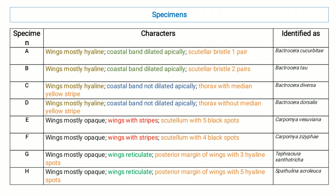Specimen C had wings mostly hyaline, coastal band not apically dilated, and thorax with a median yellow stripe — identified as Bactrocera diversa. Specimen D had wings mostly hyaline, coastal band not dilated apically, and thorax without any median yellow stripe — identified as Bactrocera dorsalis.